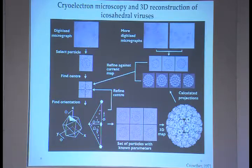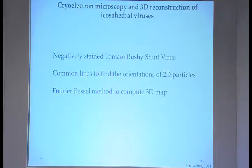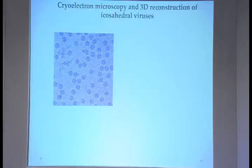Crowther in 1971 used common lines — which are still used today to find orientations of 2D particles — and then the Fourier-Bessel method to compute the 3D map. The overall method remains very similar to what Crowther did.